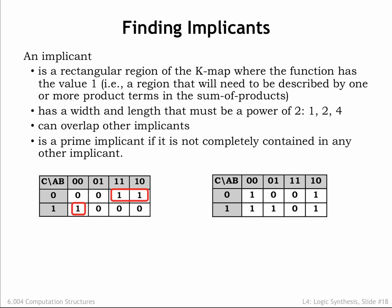The second prime implicant is the pair of adjacent 1s in the upper right-hand corner of the K-map. This implicant has 1 row and 2 columns, meeting our constraints on an implicant's dimensions.